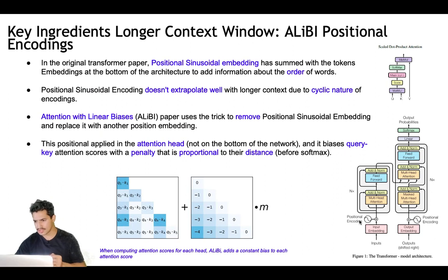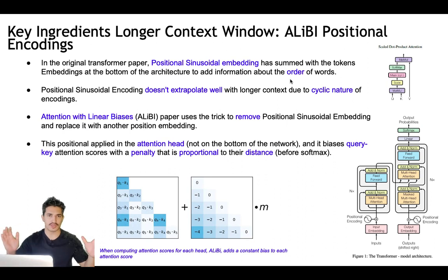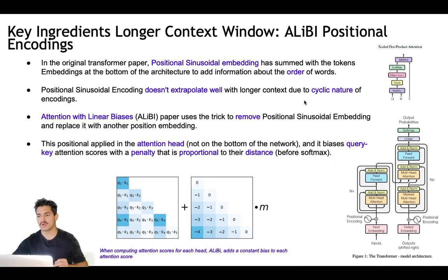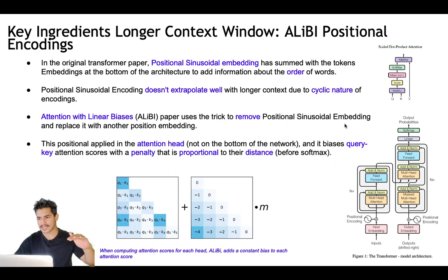In the transformer architecture, positional embeddings are injected. The original transformer paper uses positional sinusoidal embeddings — sine and cosine waves — which are summed with the input tokens at the bottom of the architecture to add information about the relative position of words. However, positional sinusoidal encodings don't extrapolate well to longer contexts due to the cyclic nature of these embeddings. The ALiBi paper — Attention with Linear Biases — suggests removing the positional sinusoidal embedding and replacing it with another positional embedding applied in the attention head itself.